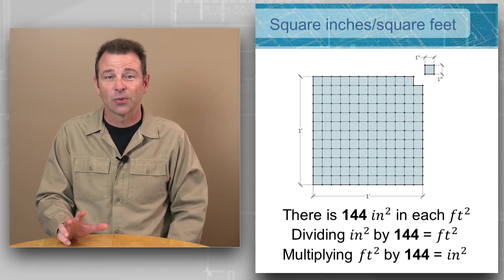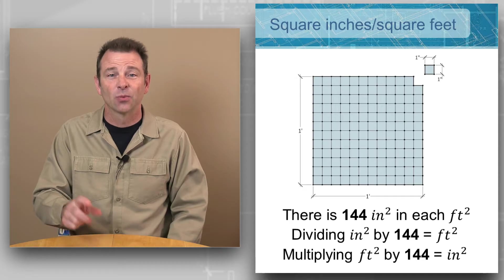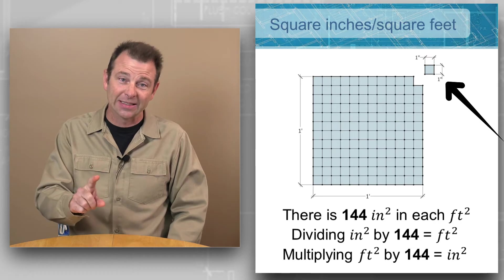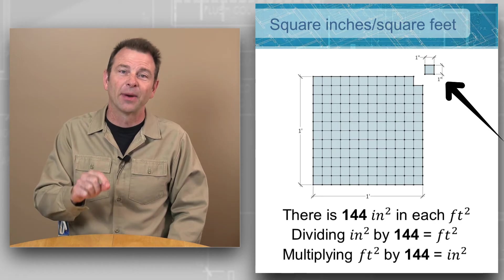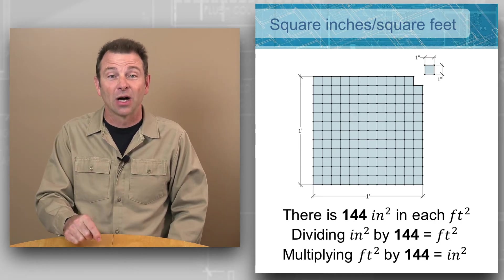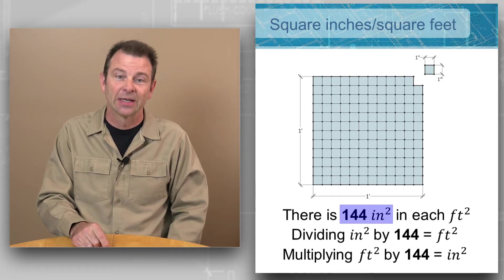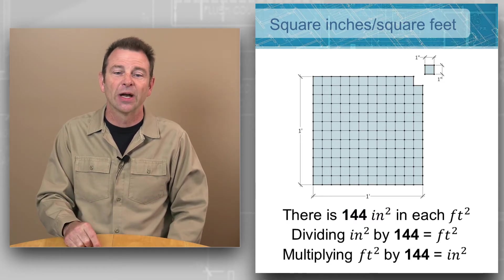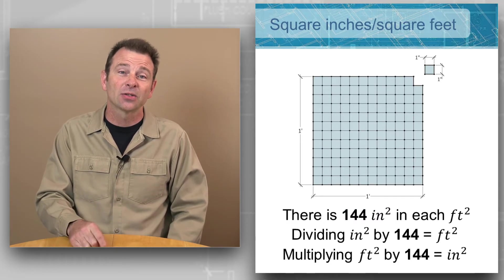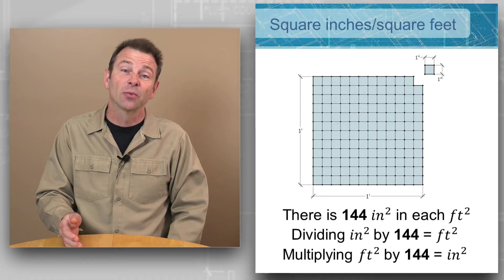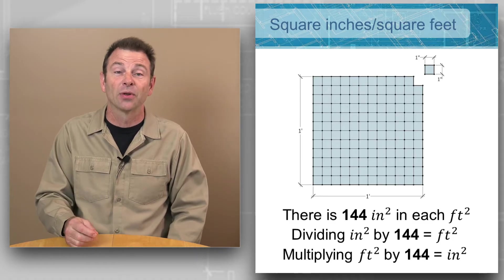I think this illustrates it pretty well. It also gives us a number that we can work with when we're converting the units back and forth. That number is 144 — just like our feet and 12 inches in each foot for linear measurements, there are 144 square inches in every square foot.